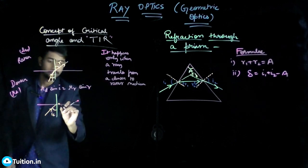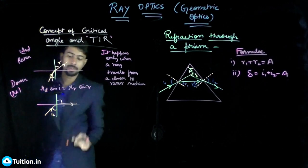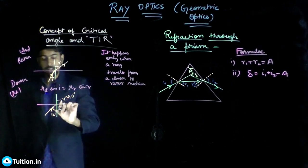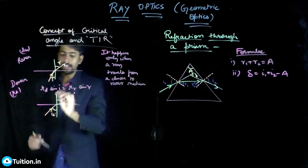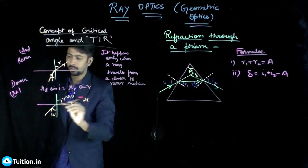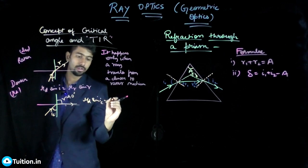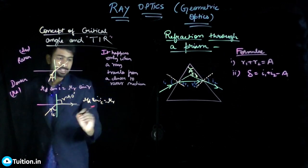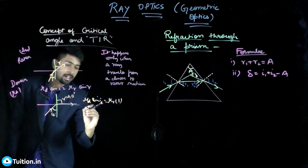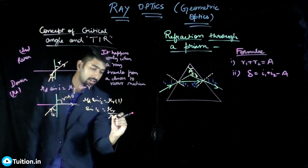That special angle is called the critical angle. When you incident your ray at the critical angle, the refracted ray bends so much that it grazes the surface — meaning r = 90°. Applying Snell's law: μd sin(ic) = μr sin 90° = μr, so sin(ic) = μr / μd.